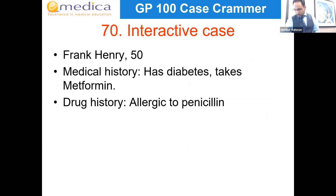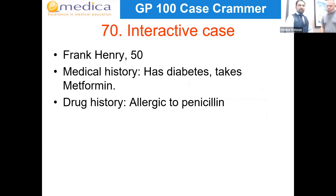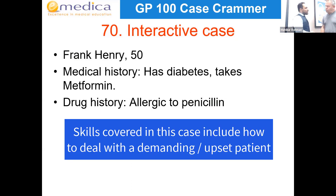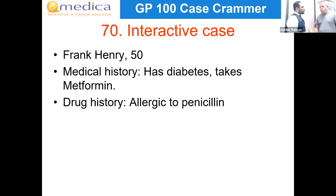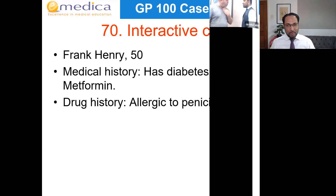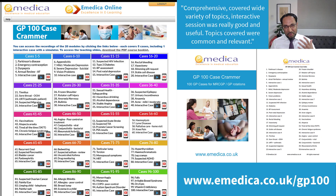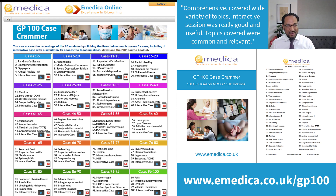Interactive Case 7: a 50-year-old diabetic on metformin, allergic to penicillin. 'I want some antibiotics for this sore throat — don't even try and fob me off.' The candidate must explore why antibiotics may or may not be the right approach. I hope you'll find this resource helpful for both GP rotations and to help you get through your MRCGP RCA or other OSCE-based GP exams. Thank you.